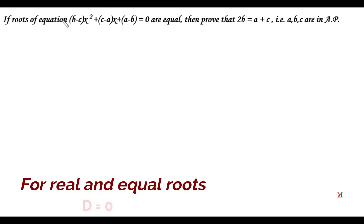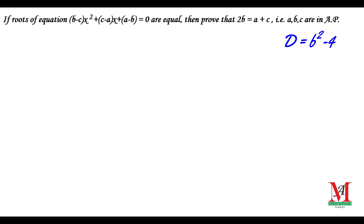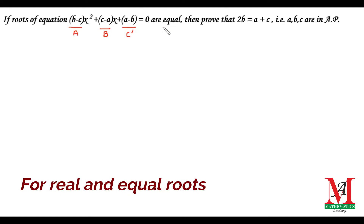Morning greetings from the Mathematics Academy. Here we see that the roots of the equation are equal, and we need to prove that 2b is equal to a plus c — that is the condition of AP. First of all, we see the quadratic equation: the coefficient of x² is a, the coefficient of x is b, and the constant term is c.